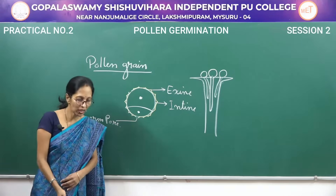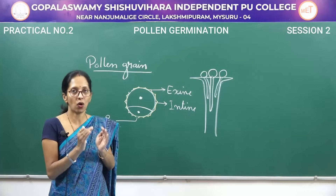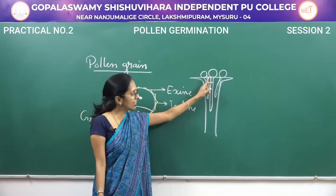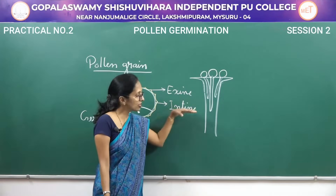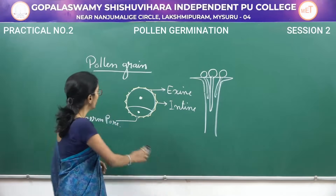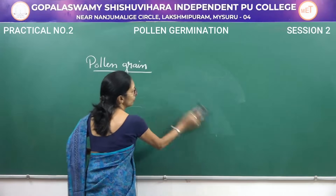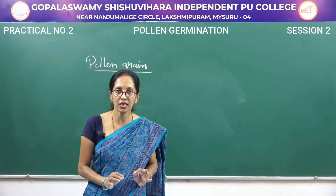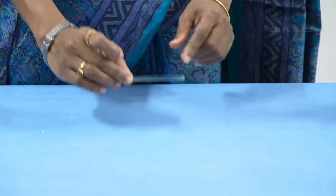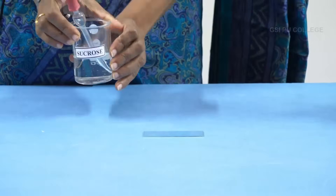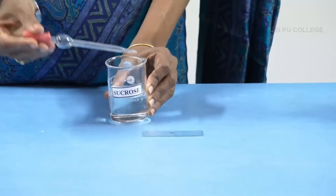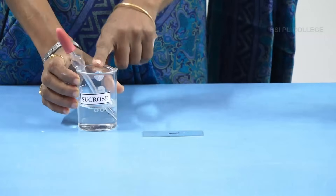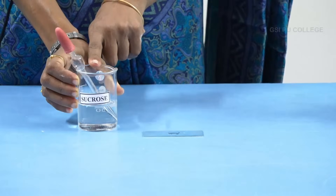So what is meant by pollen tube? When the pollen grain falls on the stigmatic surface of the gynoecium, it absorbs water and sugar substances present in the stigmatic region, and then the entire structure grows out as a tube-like structure. This is natural germination. In this session you are going to study artificial germination of pollen grain. Take a glass slide and add one or two drops of sucrose solution. We also add a pinch of boric acid to stimulate the growth of the pollen tube.